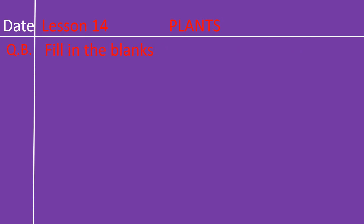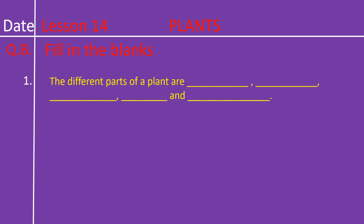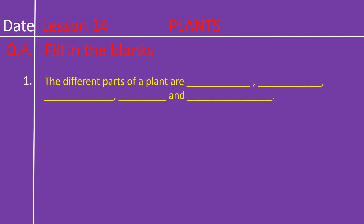In the next page, Question B — fill in the blanks. Number one: the different parts of a plant are dash, dash, dash, dash and dash. Write your answers now. The different parts of a plant are: root, spelling R-O-O-T; stem, spelling S-T-E-M; leaf, spelling L-E-A-F; fruit, spelling F-R-U-I-T; and flower, spelling F-L-O-W-E-R.